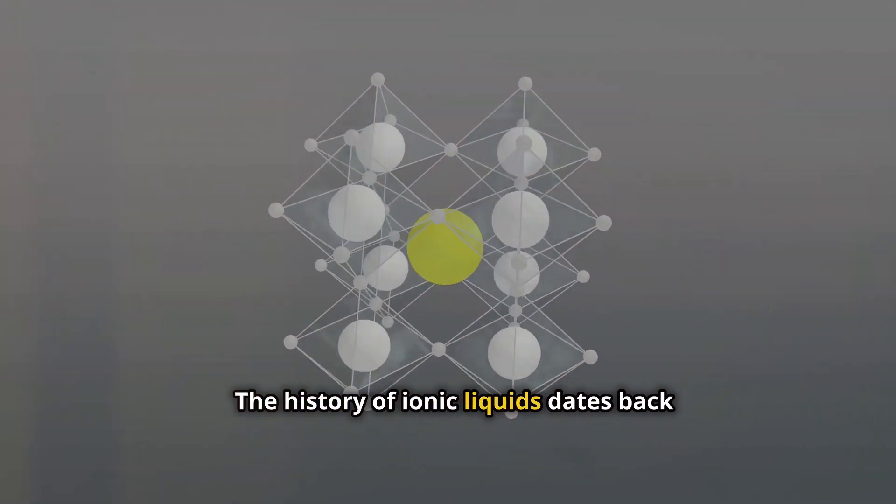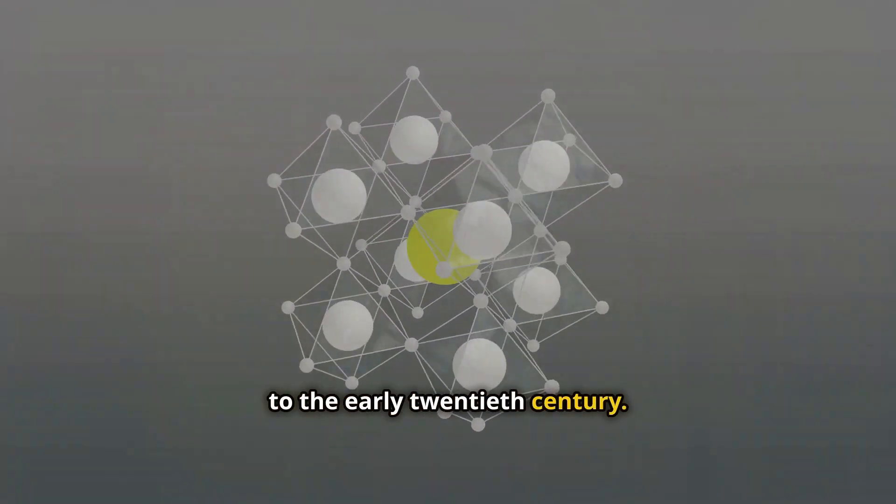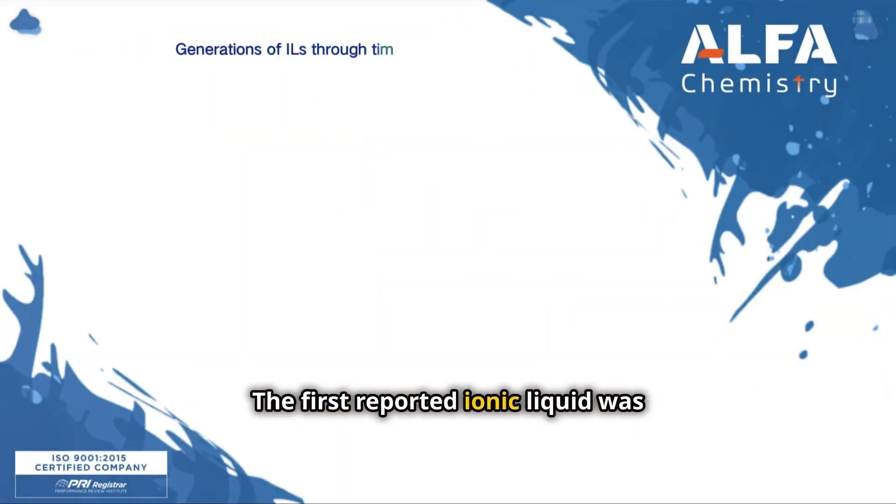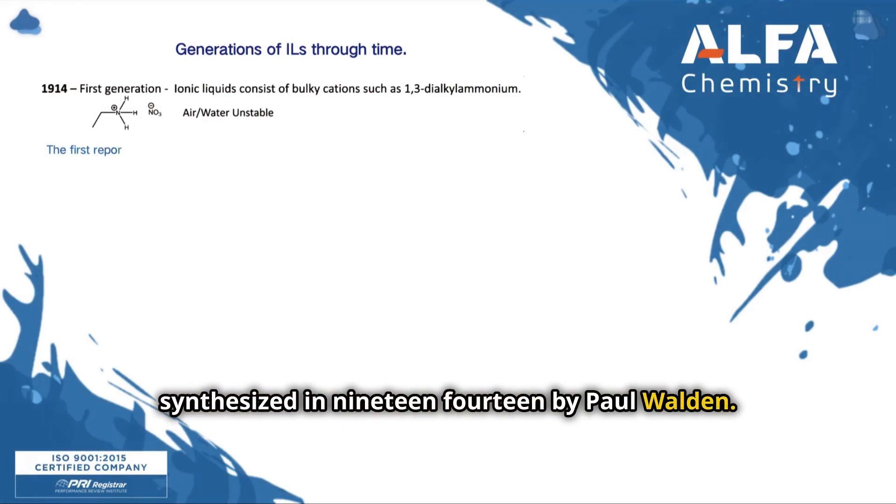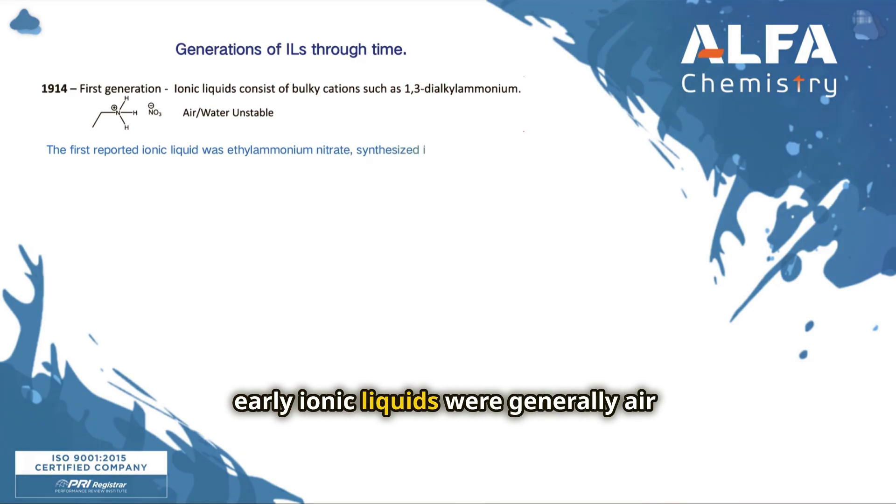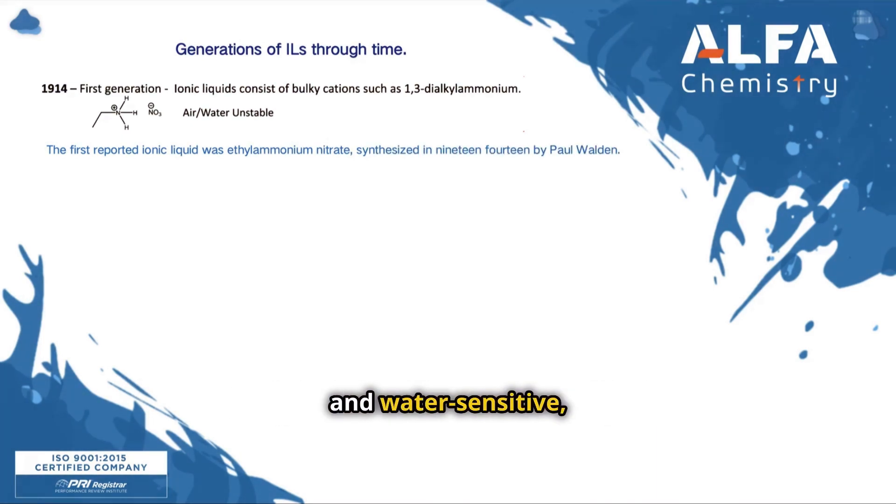The history of ionic liquids dates back to the early 20th century. The first reported ionic liquid was ethyl ammonium nitrate, synthesized in 1914 by Paul Walden. However, early ionic liquids were generally air and water sensitive, limiting their practical applications.